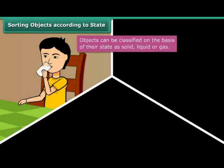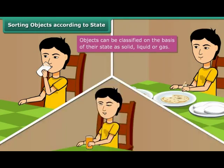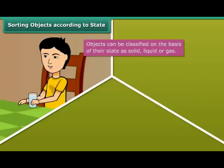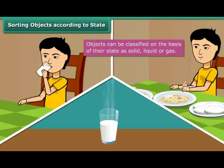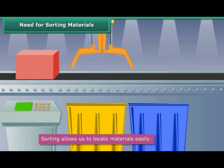The water you drink to quench your thirst is liquid whereas the food you eat is solid. The chilled juice you relish in summers is liquid whereas the glass container you drink it from is solid. The steaming hot milk you enjoy in winters is liquid whereas the steam coming out of the milk is a gas. Thus all the objects we see around us can be classified into one of three categories: solid, liquid, and gas.